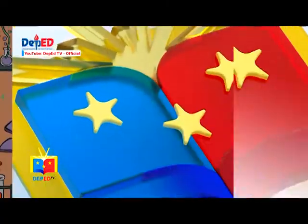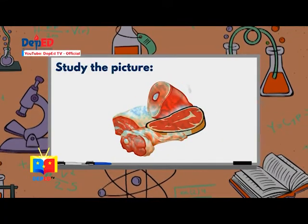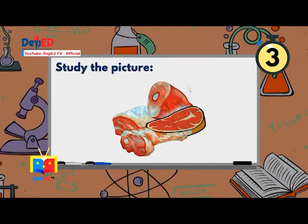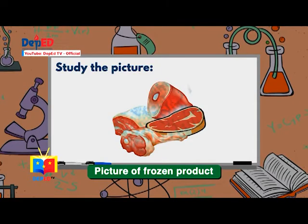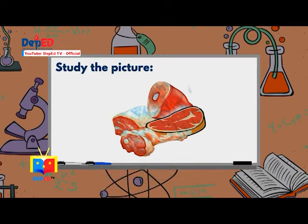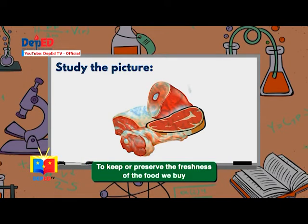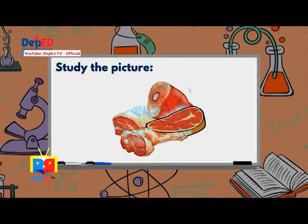Our world constantly changes. It undergoes physical and chemical changes. These changes may have good and bad effects in our environment. Study the first picture on the screen. What do you see in the picture? Correct! A picture of frozen products. Why are those products frozen? That's right — to keep or preserve the freshness of the food we buy. What is the process involved? Very good! Freezing!